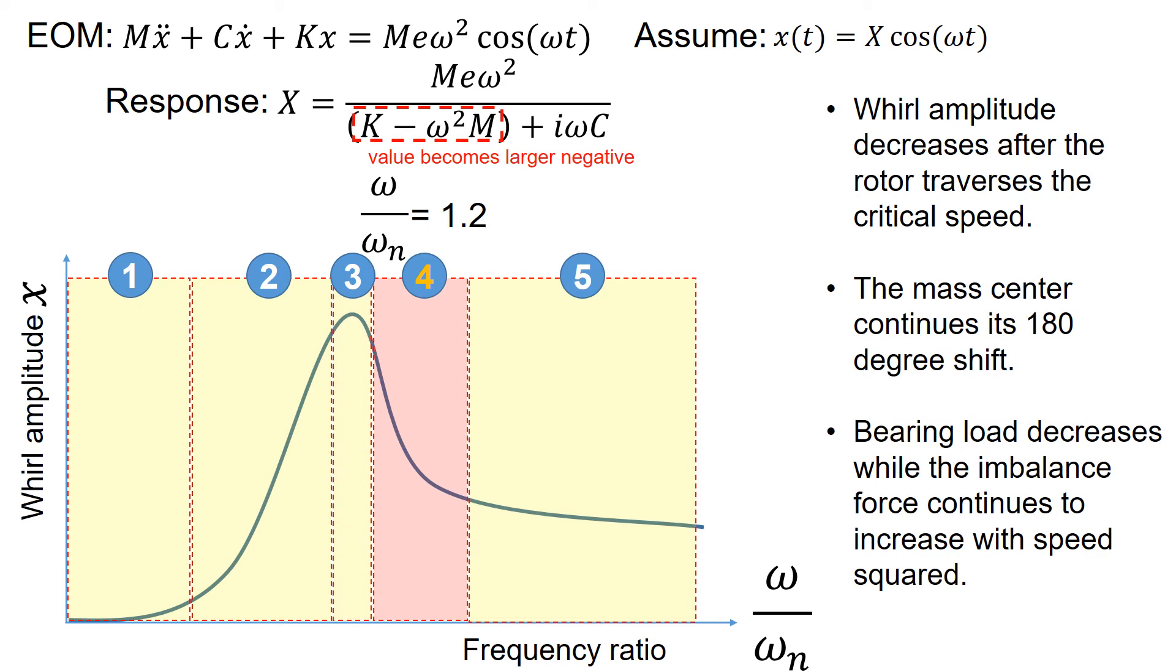Moving on to the area of interest number 4, where the rotor speed just surpassed the natural frequency. We could assume the frequency ratio is about 1.2. At this condition, the denominator value of the rotor response X increases with the frequency ratio. So the amplitude motion X decreases with increasing running speed. At this condition, the bearing load decreases while the imbalance force continues to increase.